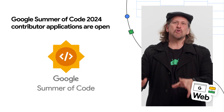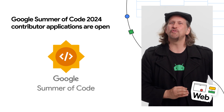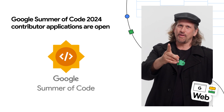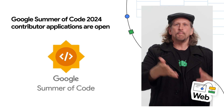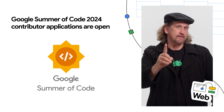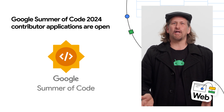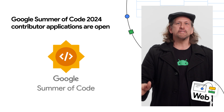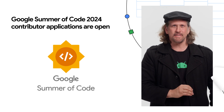The contributor applications for Google Summer of Code 2024, now in its 20th year, are open. If you're a student or a beginner in open source software development and 18 or more years old, we hope you will apply. The application period closes April 2nd at 1800 UTC.